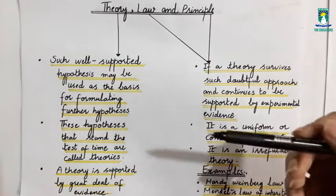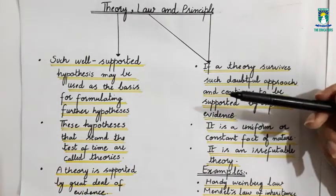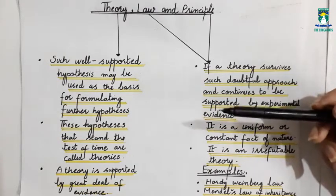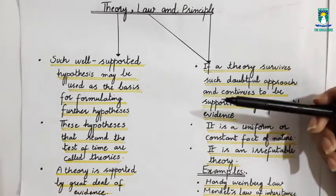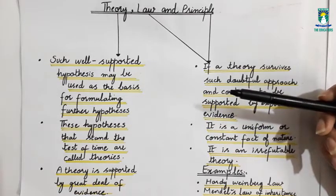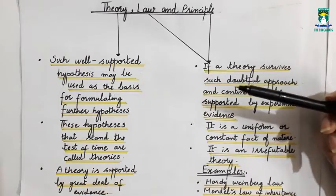A theory is supported by a great deal of evidence. The productive theories keep on suggesting new hypotheses and so testing goes on. The theories suggest further new hypotheses and testing continues on them. Many biologists take it as a challenge and exert greater efforts to disprove the theory.